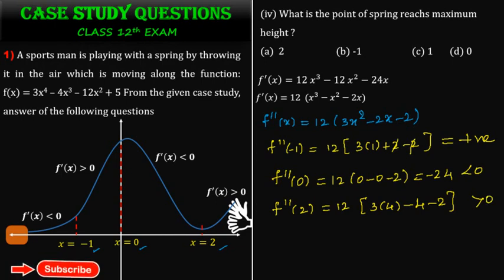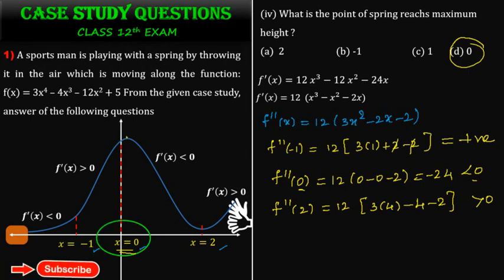Note: when the second derivative is negative, it is a local maximum point; when positive, it is a local minimum point. Since f''(0) is negative, x = 0 is the local maximum point. Therefore, the spring reaches its maximum height at x = 0.